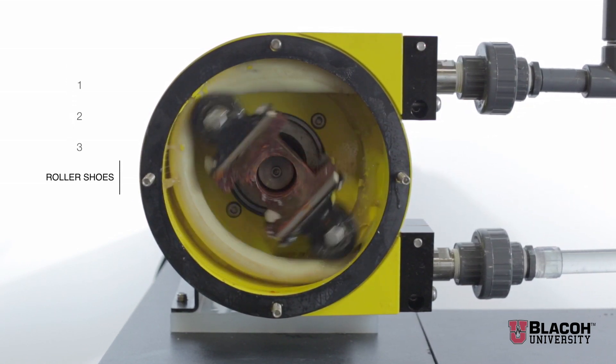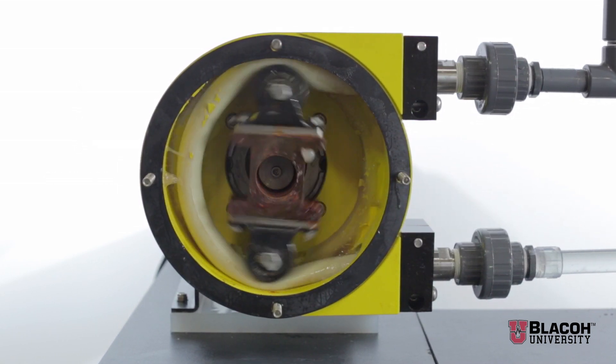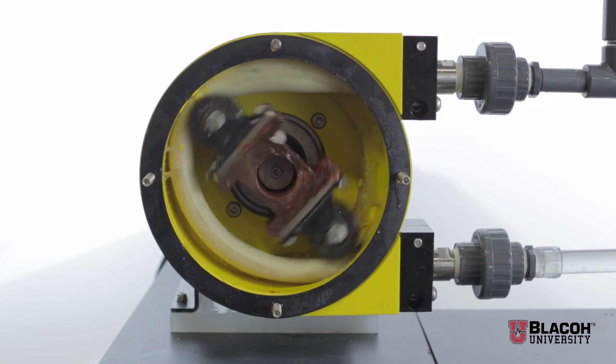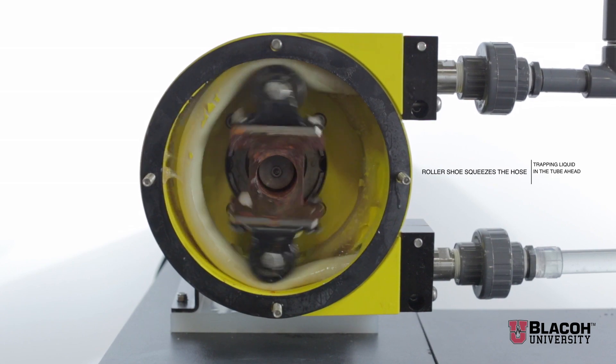For this video we have removed the front of the hose pump to provide a better view of the hose and roller shoes. At the pump inlet a roller shoe squeezes the hose, trapping liquid in the tube ahead of it.